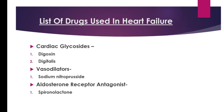The next group is aldosterone receptor antagonists. The example drug is spironolactone. This drug mainly makes the kidneys move extra water and salt out of the body. Extra salt and water go out from the body, and that is why blood pressure reduces or decreases.